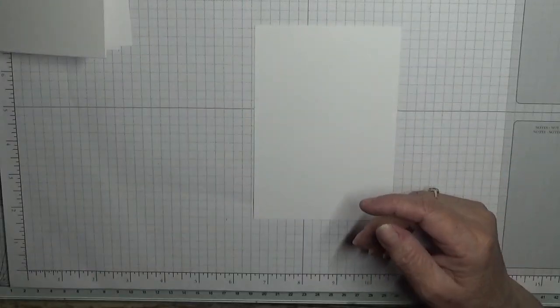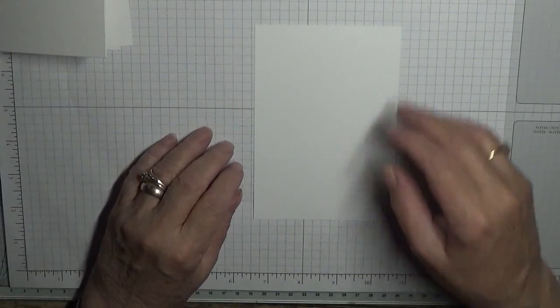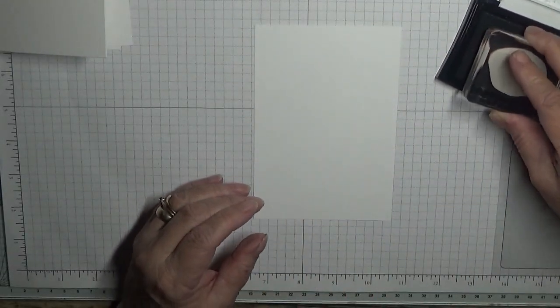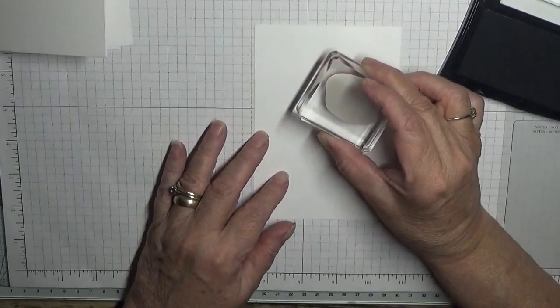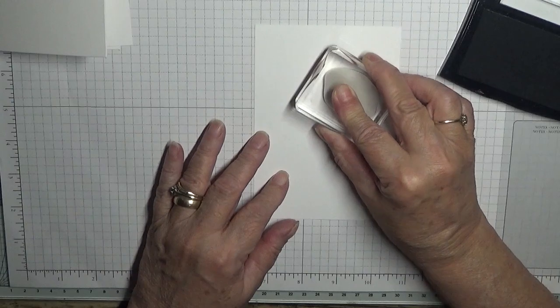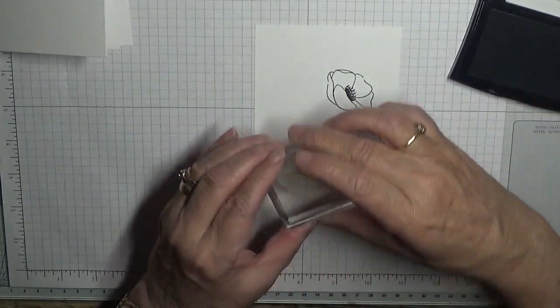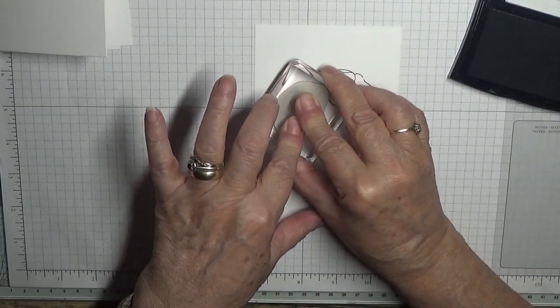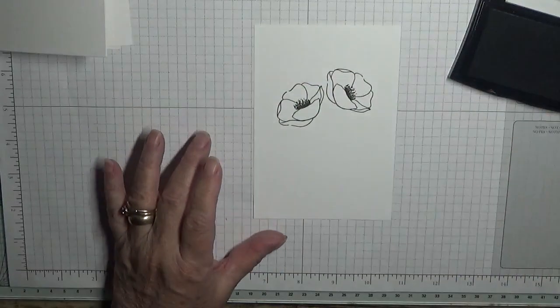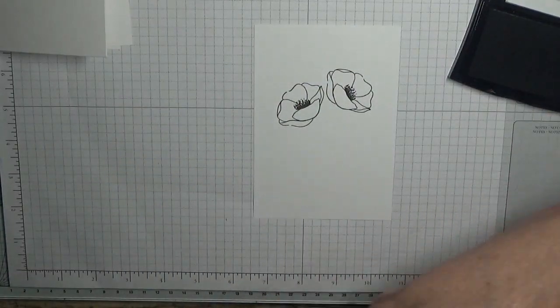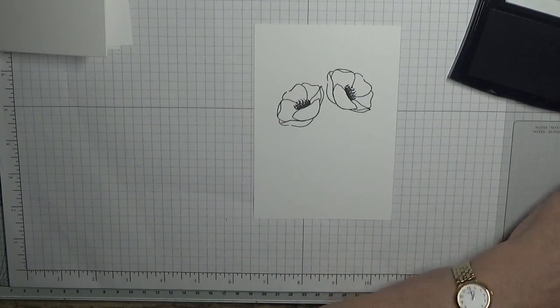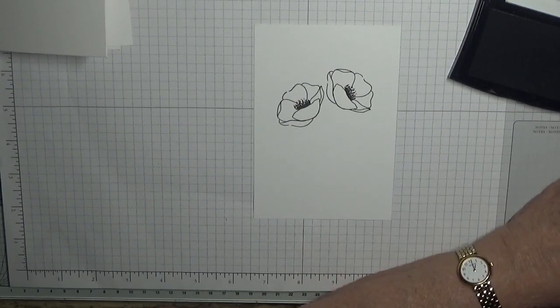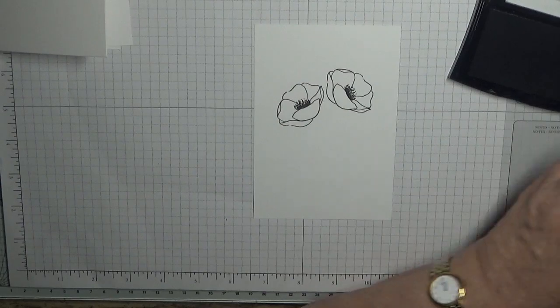So to get started we need to, this one goes fine, and our poppy stamp and we need to stamp one poppy there, and one poppy there, and one poppy there, and one poppy there. Nice and clean.